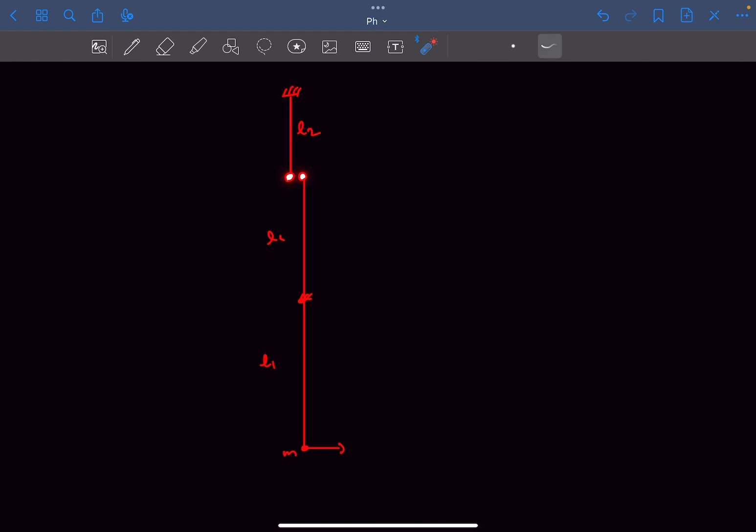It was also given that after this particular collision between these two bobs, this bob over here acquires the minimum velocity to complete a circle. This bob is given the minimum velocity to complete a vertical circle. So if we say this velocity was v1, then v1 using the previous result is going to be square root 5gl1, and at the topmost point the velocity of this bob is square root gl1 in the leftward direction.